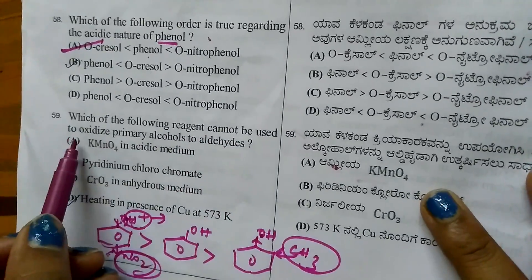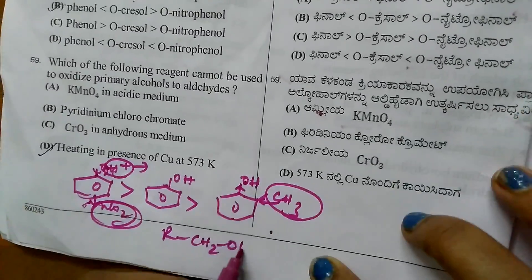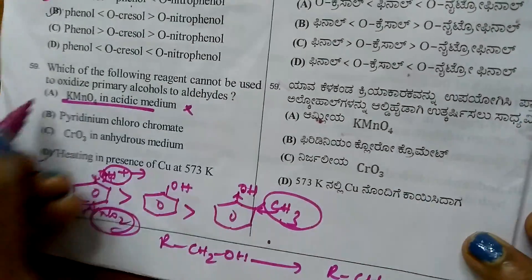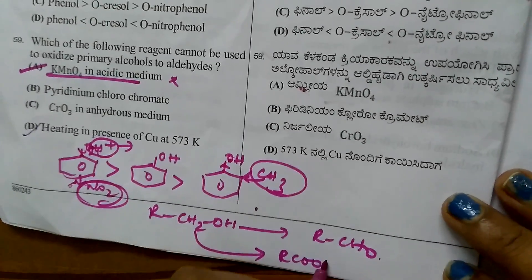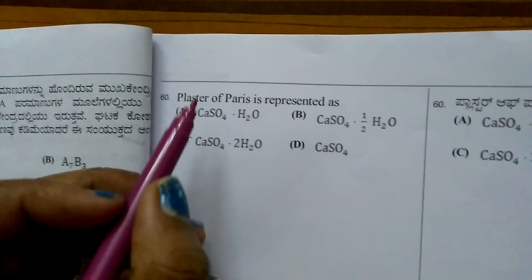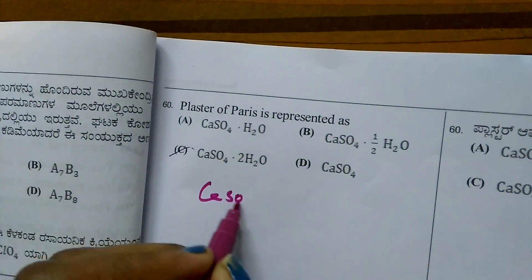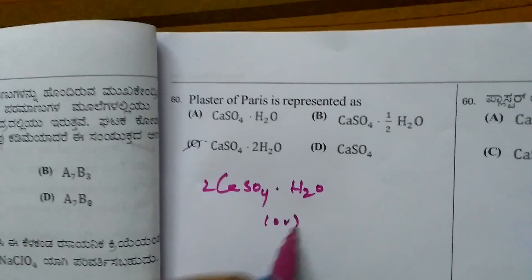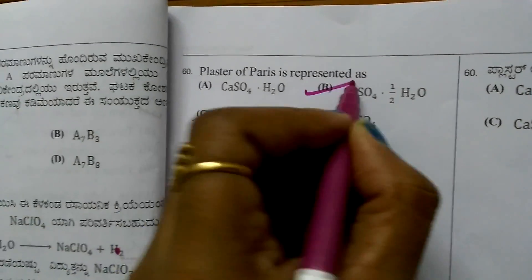Question 59: Which reagent cannot oxidize primary alcohols to aldehydes? KMnO4 in acidic media cannot be used because it directly converts alcohols to acids. Question 60: Plaster of Paris is represented as CaSO4·1/2H2O or 2CaSO4·H2O. Second option is correct.